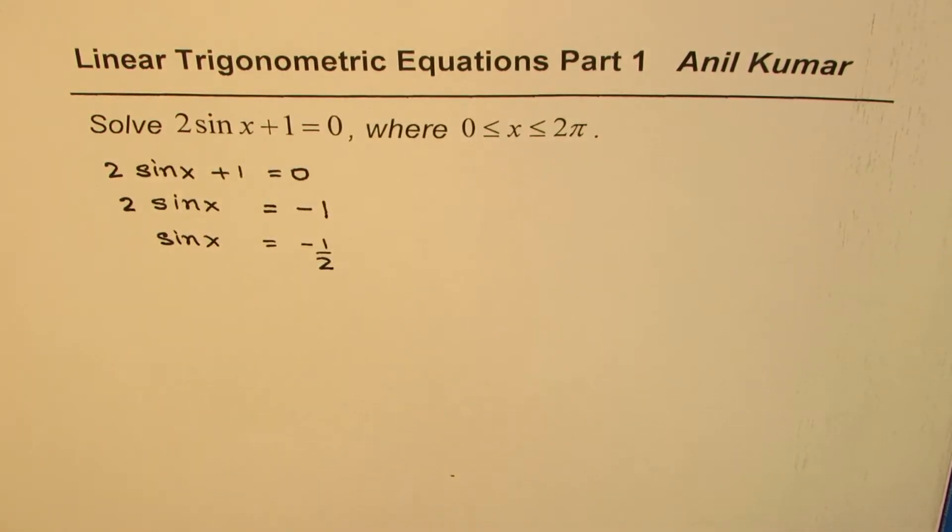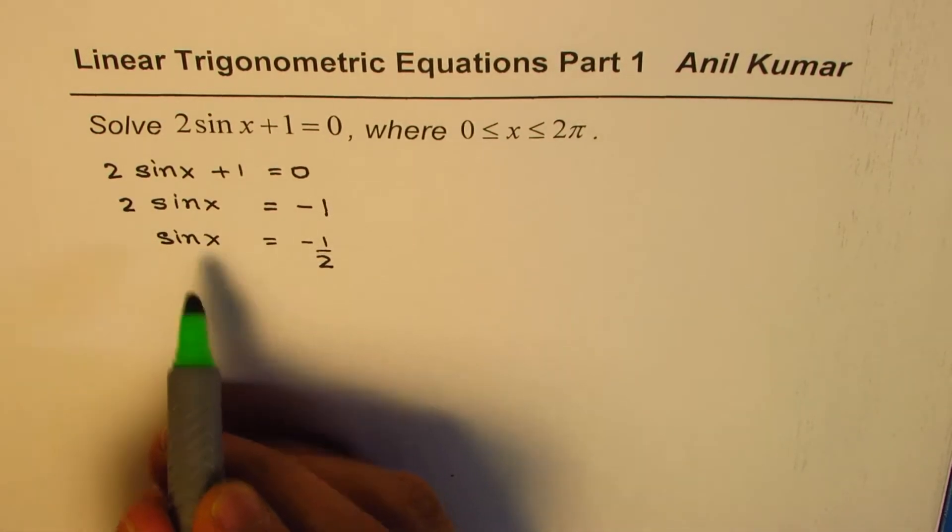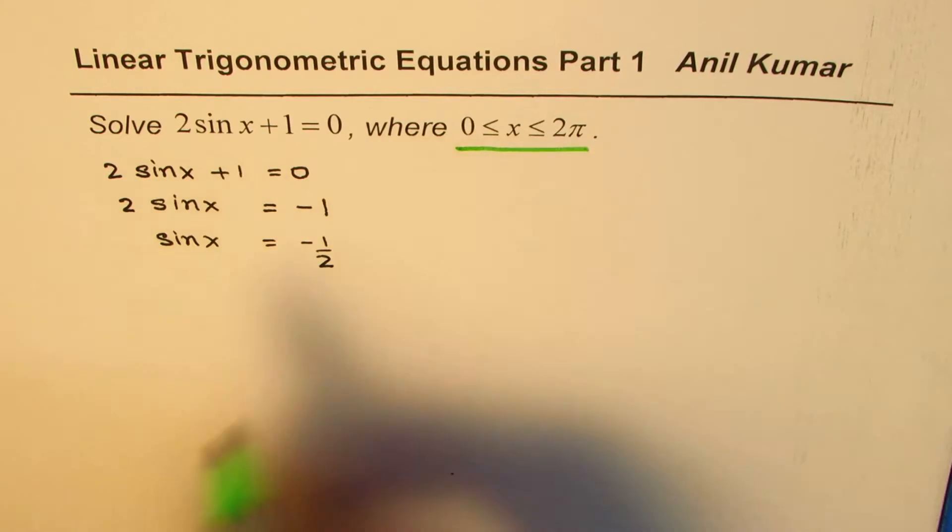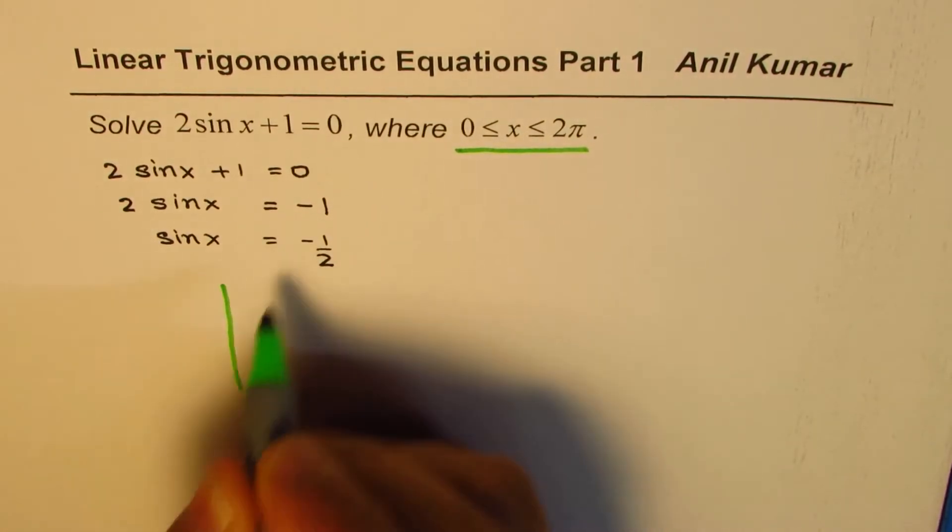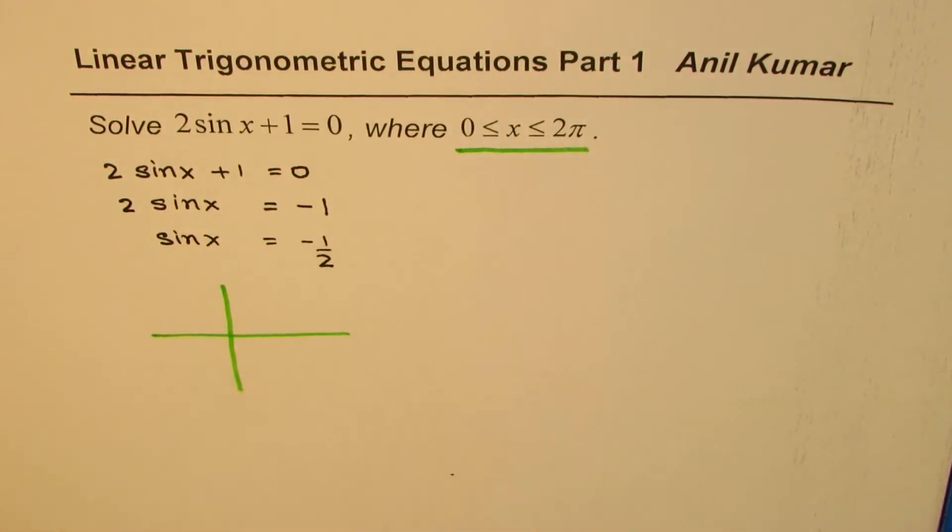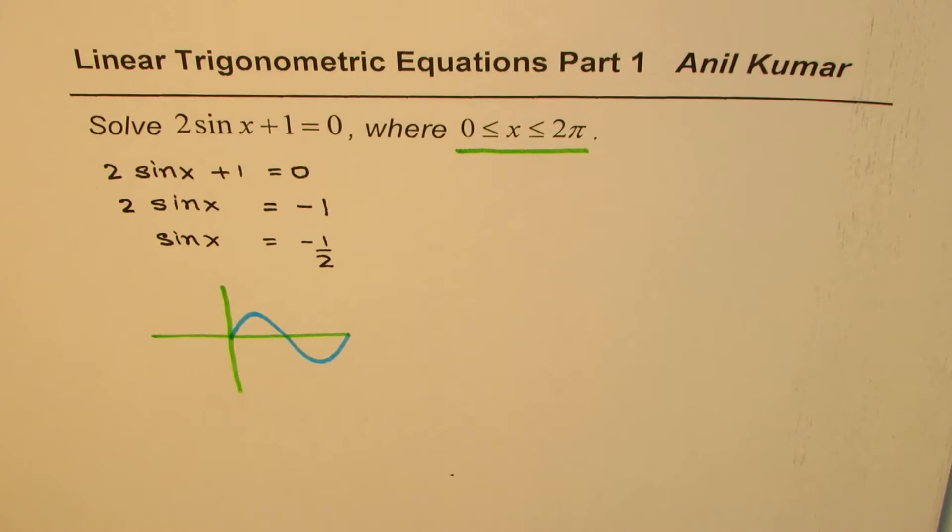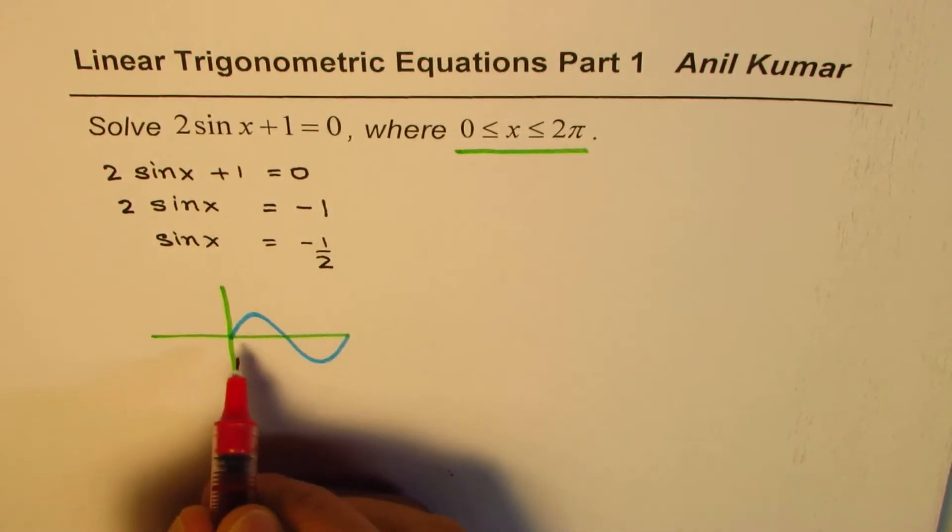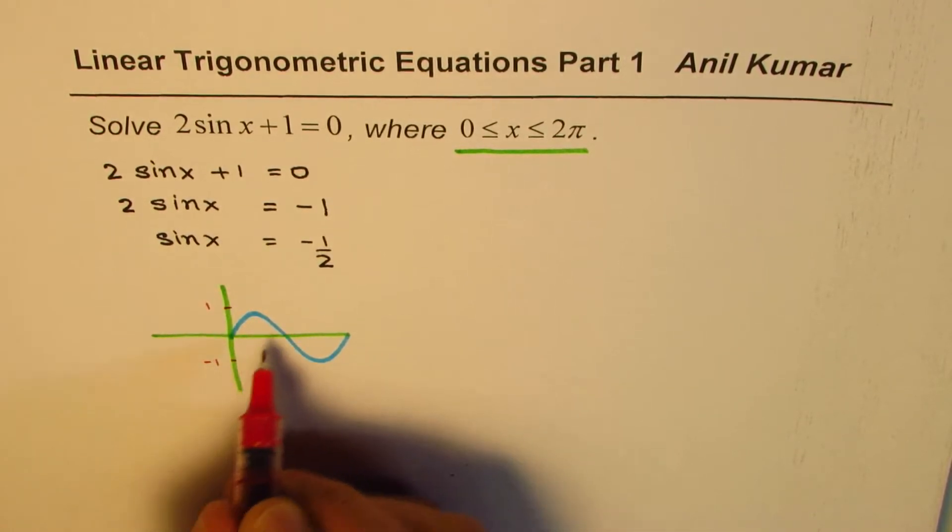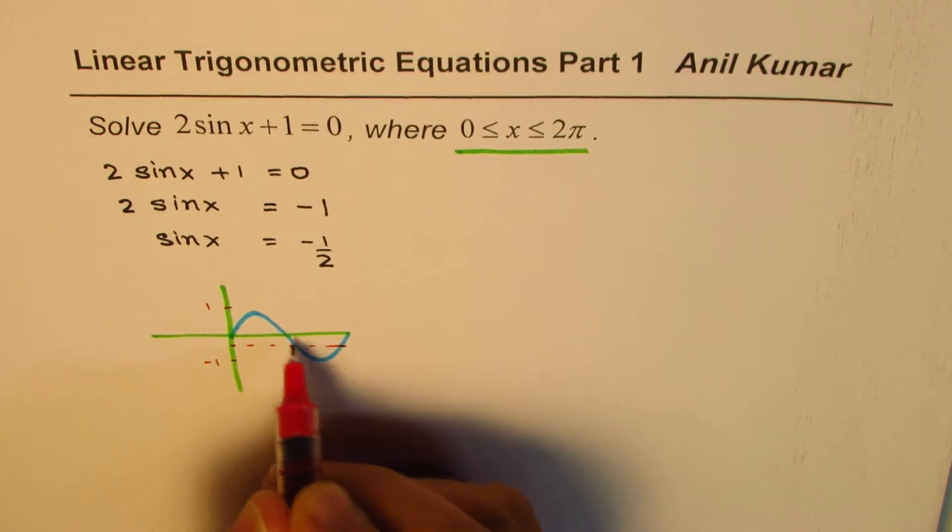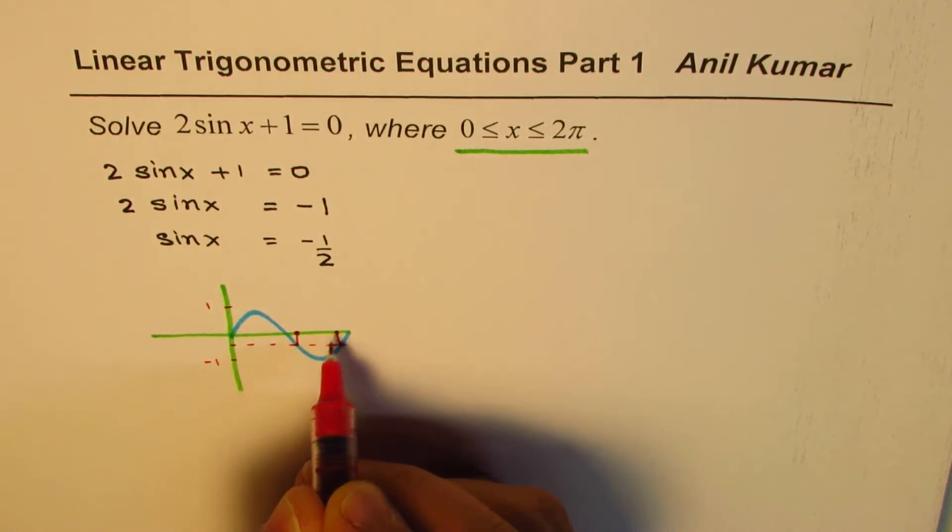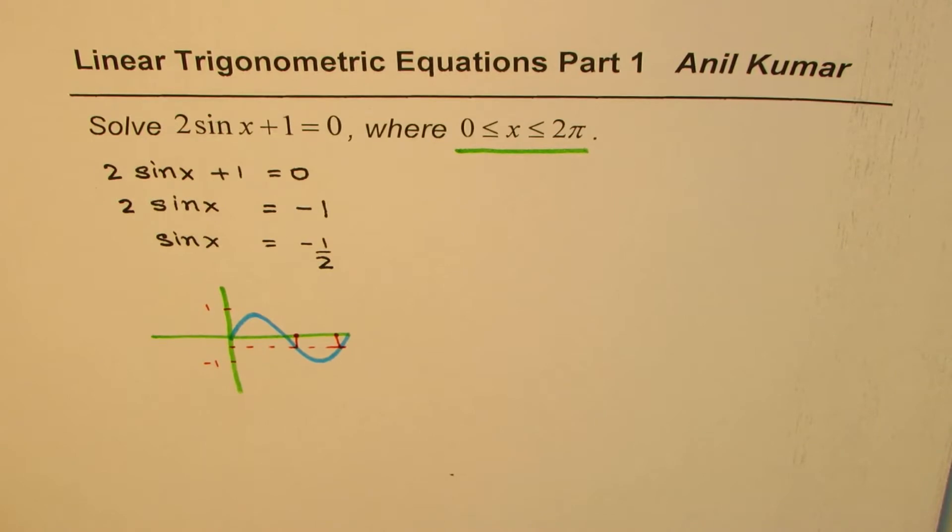Now once we get that we need to figure out how many solutions are there for the given equation in the given domain. Domain is from 0 to 2π. We can find this in a couple of ways. One method is to draw the sine wave itself and then figure out. Within 0 to 2π we will have one wave. And -1/2 value will be somewhere here. So you are expecting 2 solutions, one in quadrant 3 and the other one in quadrant 4.